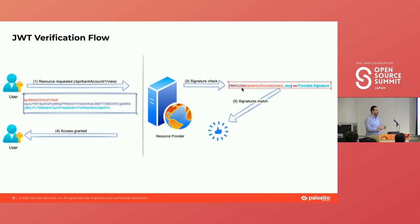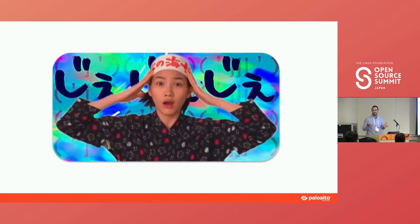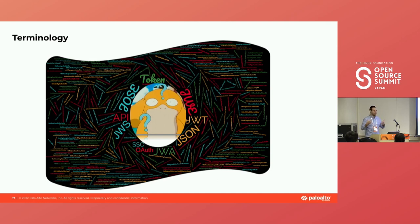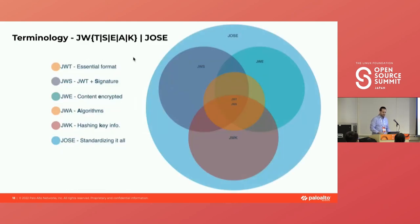Now what about the terminology? You've probably heard about JWS, JWK, JWE, JWT — it's just too much. The first time you learn about these terms you're overwhelmed and don't know where to go from there. For that, we have a simple Venn diagram that tries to simplify this.